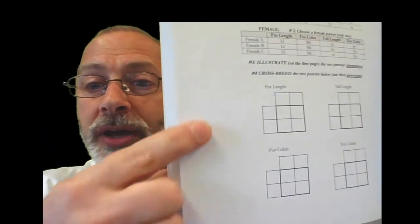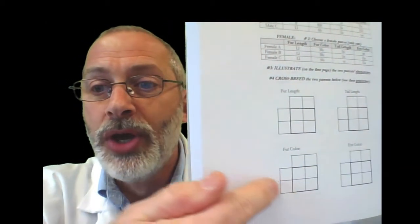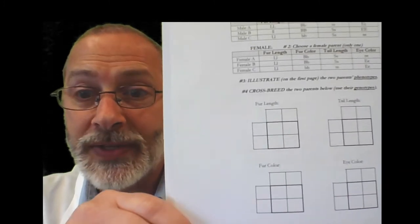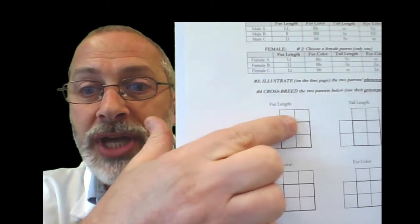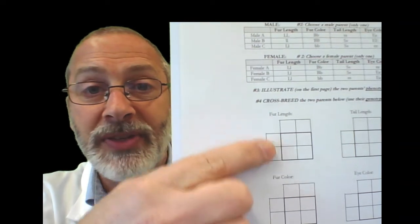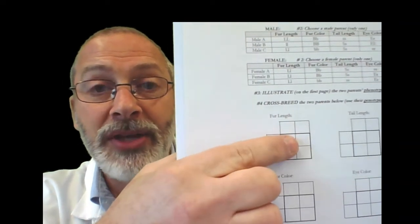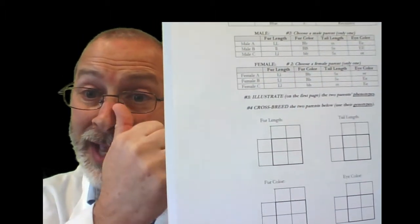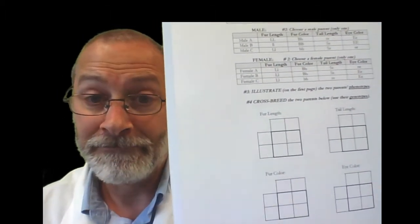Again, you've already selected the male and the female to breed, and now you have four Punnett squares. One Punnett square for each of the four traits. So put the male genotype, the male that you chose, put that genotype above, put the female genotype on the side, and then complete the Punnett square for each of the four characteristics that you selected from. Cool with that?